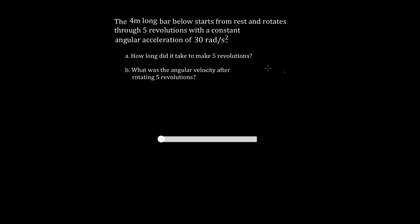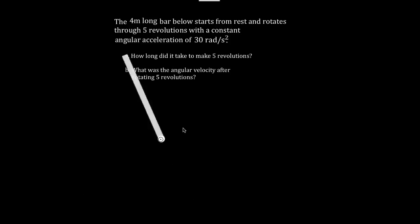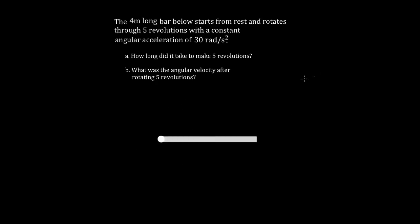Let's say you have a four-meter-long bar — it starts from rest and rotates through five revolutions with a constant angular acceleration of 30 radians per second squared. The question is: how long did it take for this bar to make the five revolutions? First, identify the variables you know. It revolved five revolutions — that's the angular displacement — but it's in revolutions. We want delta-theta always in radians. Since the acceleration is given in radians per second squared, we have to compare apples to apples.